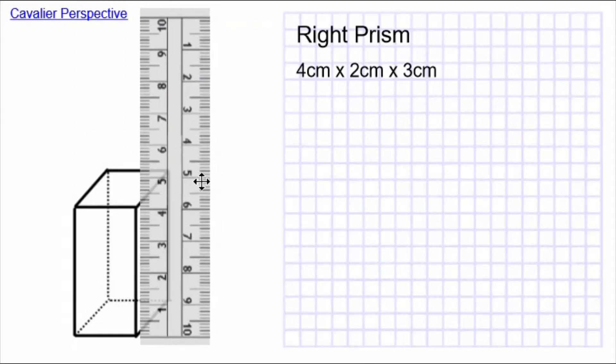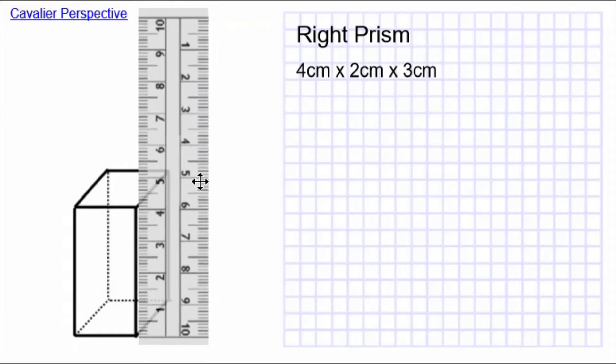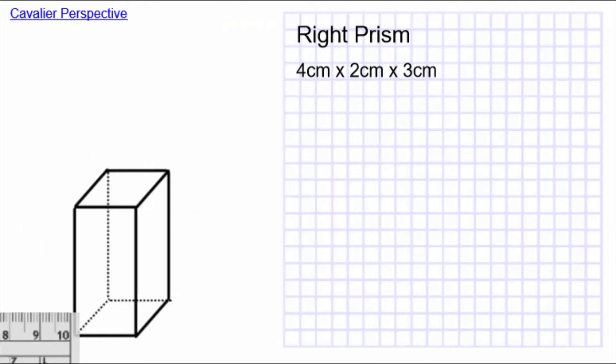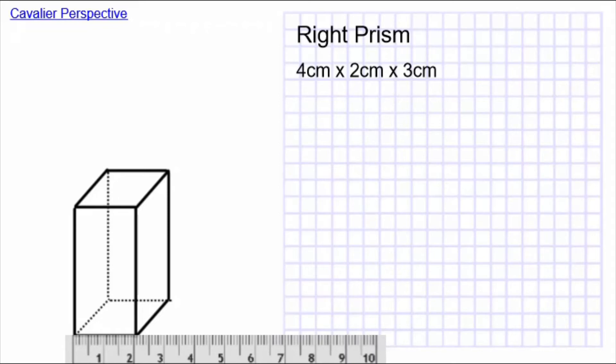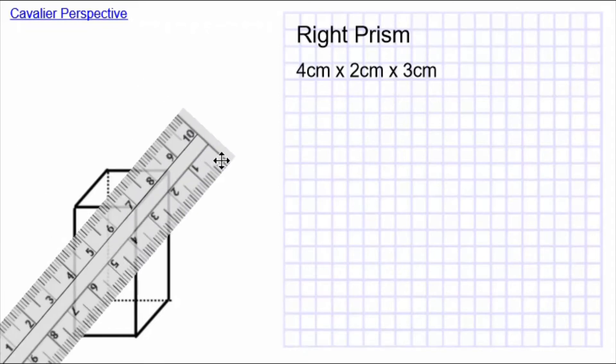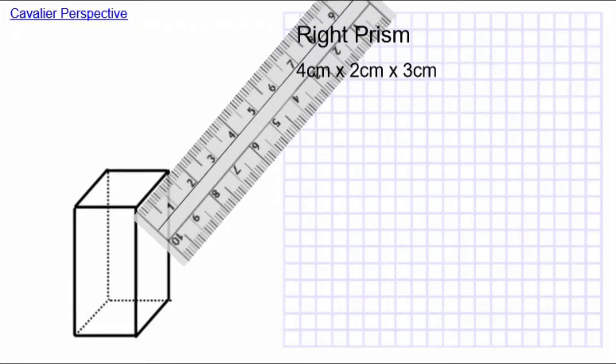With my ruler, I can see that the way I have this right prism drawn, the height is 4 cm and the width is 2 cm. But the depth is supposed to be 3 cm, but is actually 1½ cm.